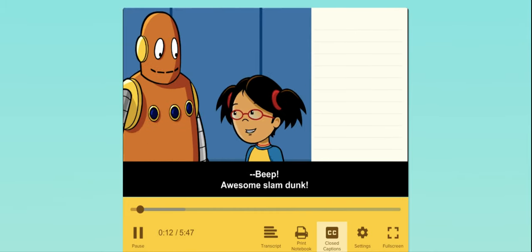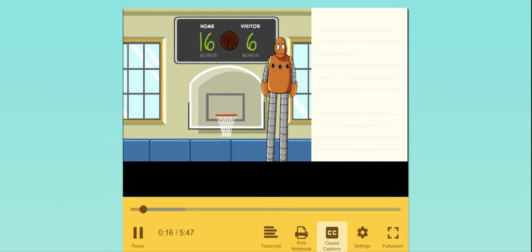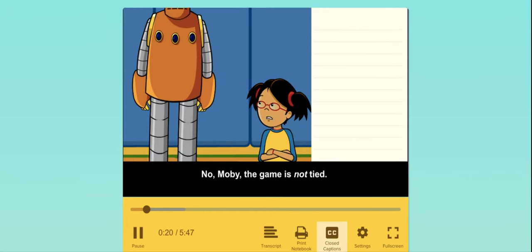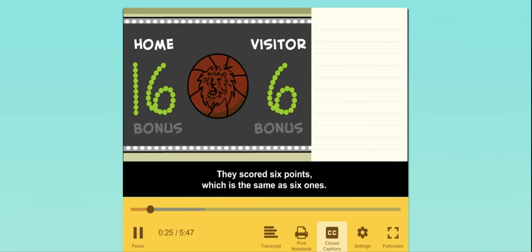Awesome Slam Dunk! What's the score? No, Moby, the game is not tied. They scored six points, which is the same as six ones. We scored 16 points, which is the same as one ten and six ones.